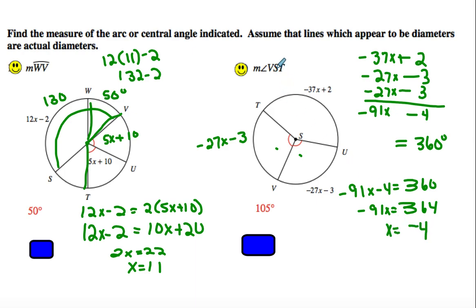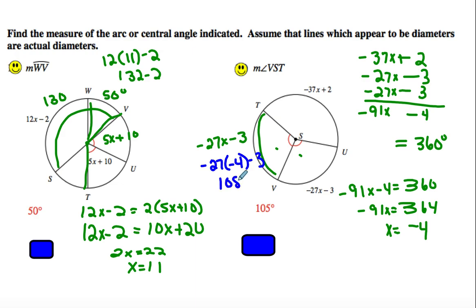It then asks us to find arc VST. We take negative 4 and plug it in: negative 27 times negative 4 minus 3. Since 27 times 4 is 108, and 108 minus 3 is 105, arc VST equals 105.